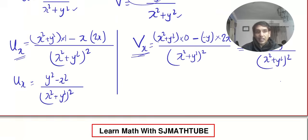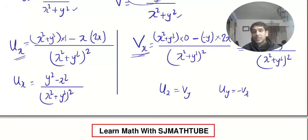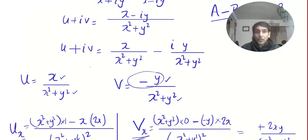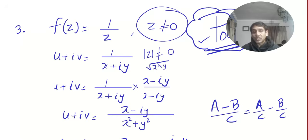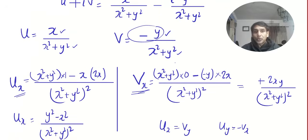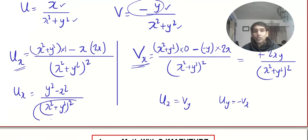Try the remaining derivatives yourself and prove that ux = vy and uy = −vx. That is not enough — also confirm that the partial derivatives are continuous. Since the question states z ≠ 0, the modulus of z, which is √(x² + y²), is also not equal to 0, so the denominator cannot vanish and the derivatives remain continuous functions.